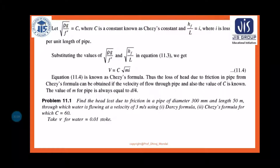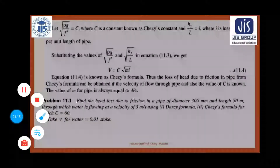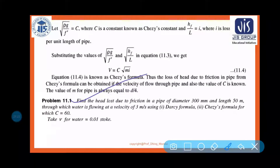Let us now take problem number 11.1. First, pause the video and try to solve it yourself. The problem: Find the head lost due to friction in a pipe of diameter 300 mm and length 50 meters through which water is flowing at a velocity of 3 m/s, using Darcy's formula and Chezy's formula where C = 60. Take kinematic viscosity of water as 0.01 stoke.